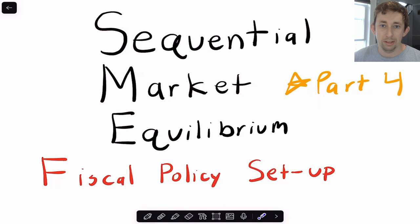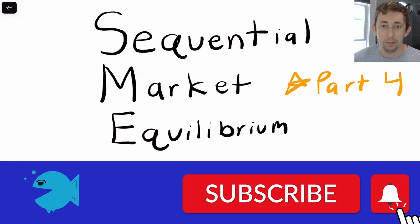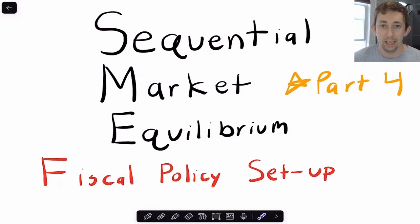This is part four, where we're starting to add fiscal policy into the model. So what's changed from those previous models is that now we're adding in government, which means we're adding in taxes. And so I just want to take a couple minutes and talk about how the setup for that works. Timestamps are below if you would like to jump around, but let's go ahead and get right into it.